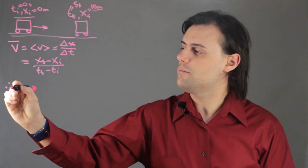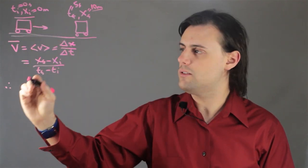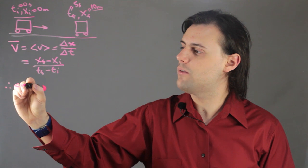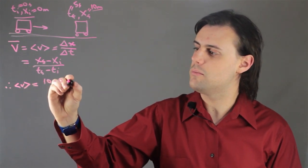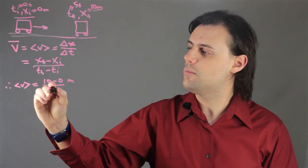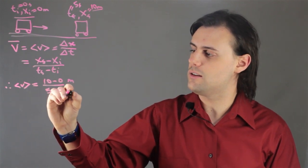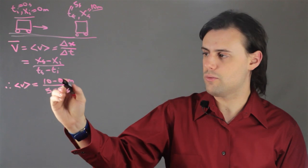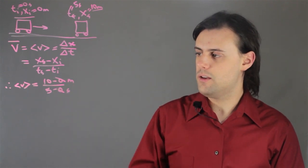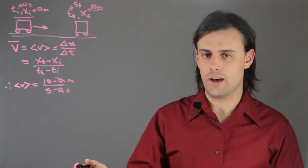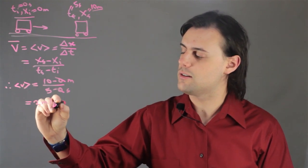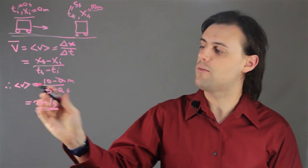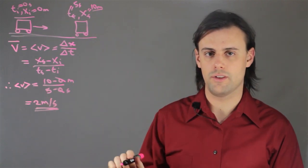Therefore, using these data points, we have the average velocity is equal to 10 minus 0 meters divided by 5 minus 0 seconds. And of course, we can ignore the 0, so we just have 10 divided by 5, and this is equal to 2 meters per second. And that would be the average velocity for this example.